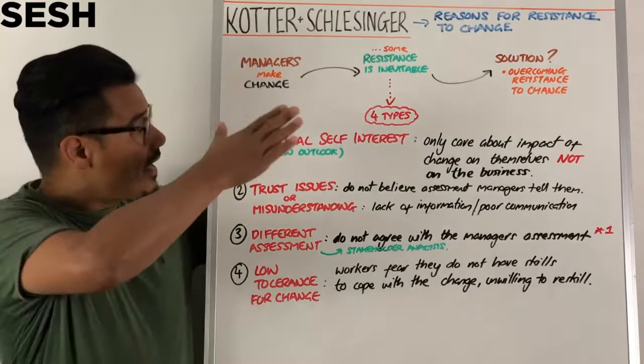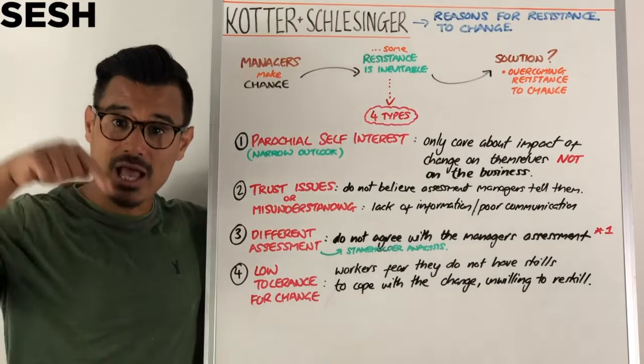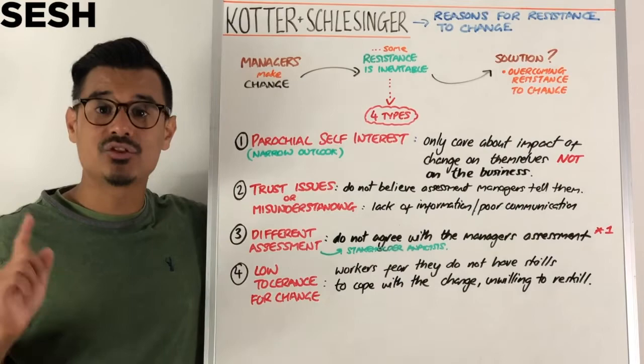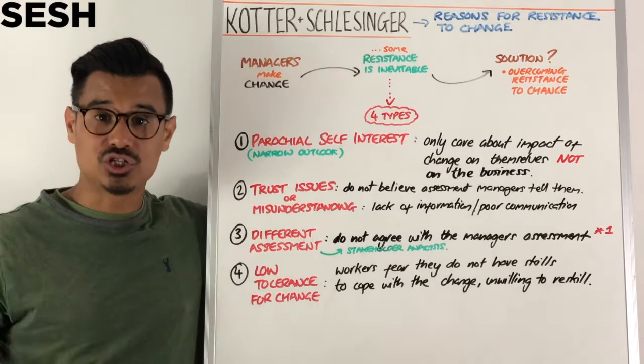Let's have a session on Kotter's resistance to change model. A manager will look to make a change, and some resistance is inevitable to any change — Dr. John Kotter himself said that, and you can check the video in the description box below. There are four types or categories of resistance that exist, and once we have this resistance, there are six different solutions, which are the methods for overcoming resistance to change.